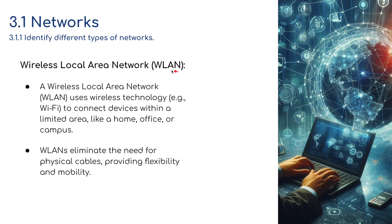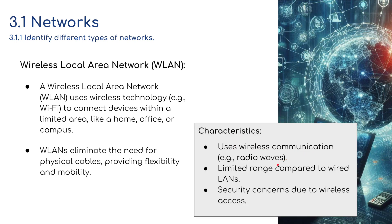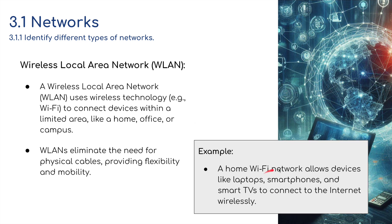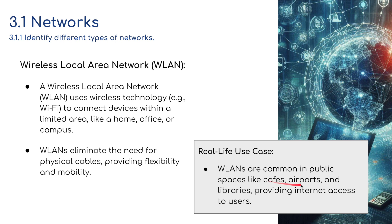A WLAN — wireless local area network — is basically the same as a LAN, but using wireless technology, e.g. Wi-Fi, to connect devices within a limited area like a home, office, or campus. WLANs eliminate the need for physical cables, providing flexibility and mobility. They use wireless communication such as radio waves, have a limited range compared to wired LANs, and there are greater security concerns due to wireless access. An example might be a home Wi-Fi network, allowing laptops, smartphones, and smart TVs to connect to the internet wirelessly. WLANs are common in public spaces like cafes, airports, and libraries.